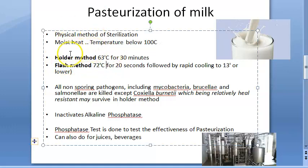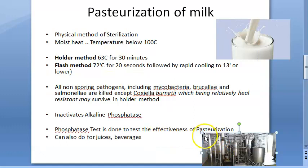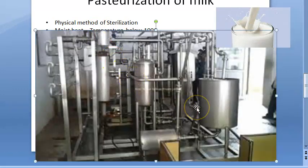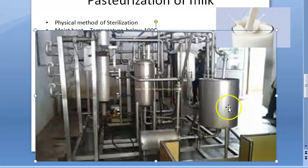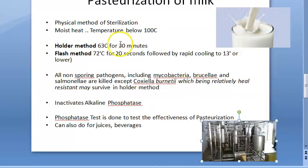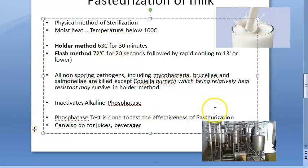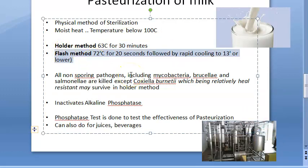In the holder method, a temperature of 63 degrees centigrade is maintained for 30 minutes. If you have visited a dairy milk processing unit during a community medicine field visit, you would have seen this kind of equipment. The flash method uses a higher temperature and is considered better.